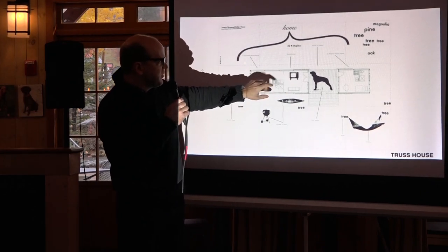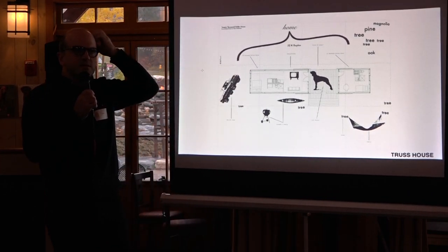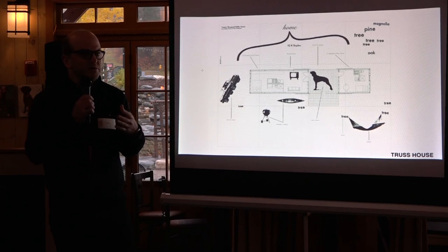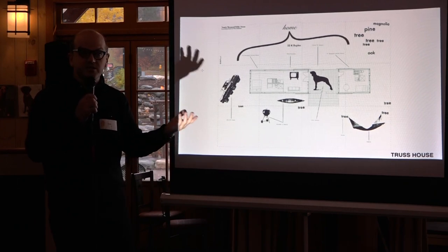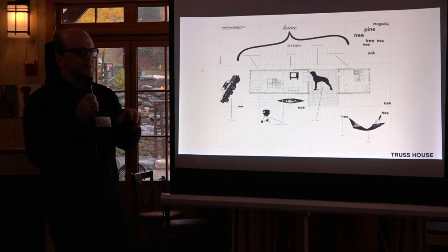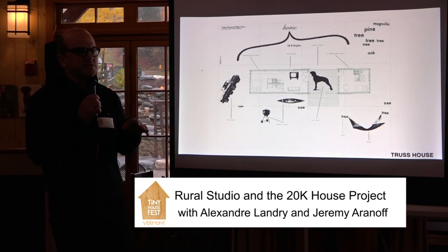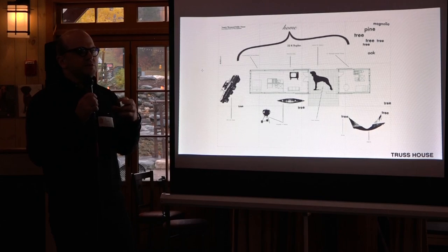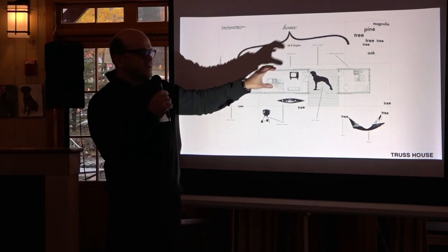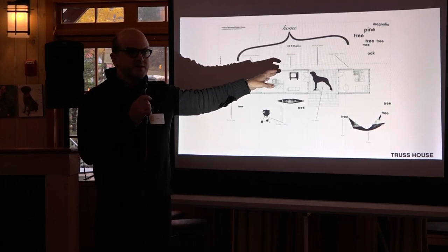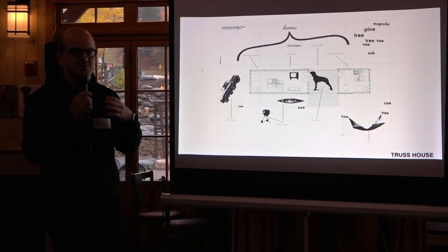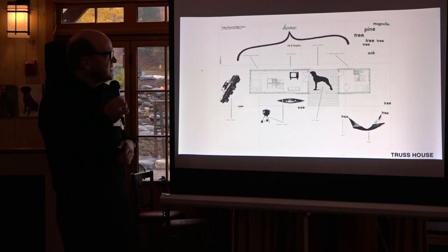Initially we planned the truss and core as one unit, but we noticed in Hale County there were many situations where people had multi-generational living or needed a secondary income unit. So the idea of multi-generational living arrangements became appealing — instead of two separate $20K houses, we pitched a $32,000 house where one unit costs $12,000 and the other $20,000, with cost savings from the increased scale of both.